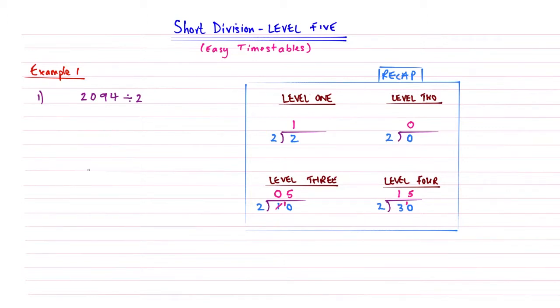Okay, so let's have a look at our first example, remembering that we're going to put all skills from the four levels together. So we've got 2,094, and we're going to divide that by 2. So if we have my line, and then the curly brace, I'm going to write the numbers underneath. So 2, 0, 9, 4, and we're dividing this by 2.